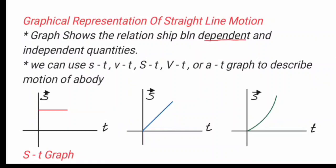Dependent variables are variables which depend on the independent one, like displacement, distance, speed, velocity, and acceleration. All of these are measured in terms of time. Time is the independent variable.